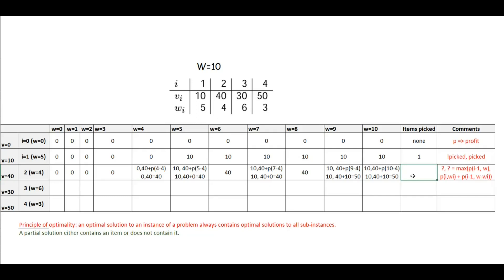Now we need to check what items have been picked. Right-hand side means the item has been picked; left-hand side means the item has not been picked. We are taking the right-hand side, so item 2 has been picked. It says 40 plus P(10 minus 4), which is P6. P6 is 10, and 10 corresponds to item 1. So we have picked two items: item 2 and item 1.